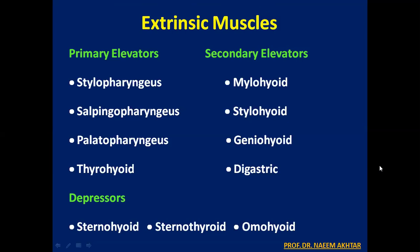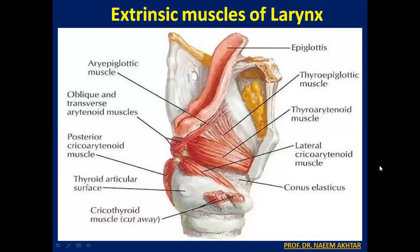The extrinsic muscles are primary elevators, secondary elevators, and depressors. The primary elevators are stylopharyngeus, salpingopharyngeus, palatopharyngeus, and thyrohyoid. The secondary elevators are mylohyoid, stylohyoid, geniohyoid, and digastric. The depressors of the larynx are sternohyoid, sternothyroid, and omohyoid.